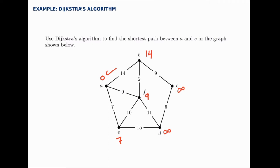For the next stage, select the node that has the shortest distance that we haven't checked yet. Of all the ones we haven't checked, e has the shortest current distance of 7. So we'll update its neighbors and see if we can find a shorter path through e. E can go to f or d. If we went through e to get to f, we would have the 7 currently plus the 10 here for a total of 17.